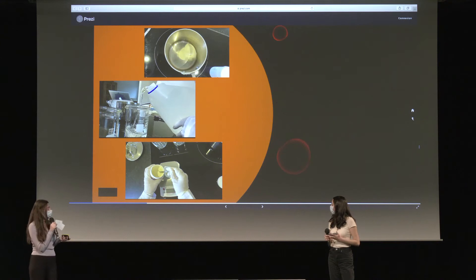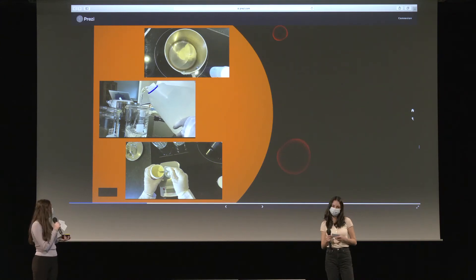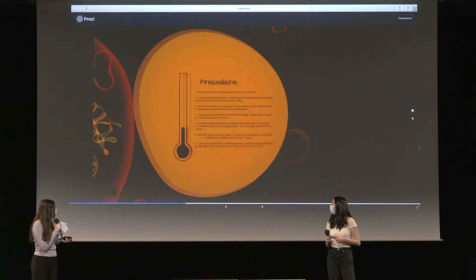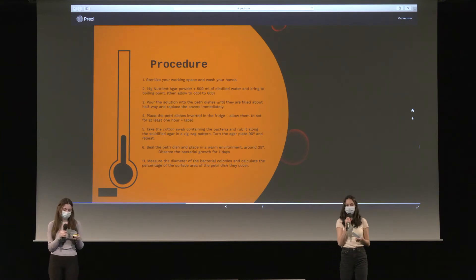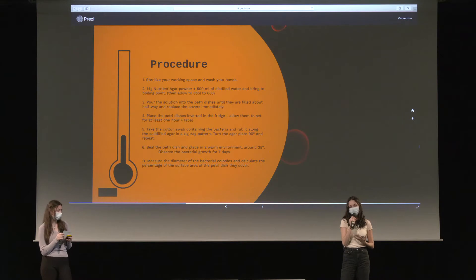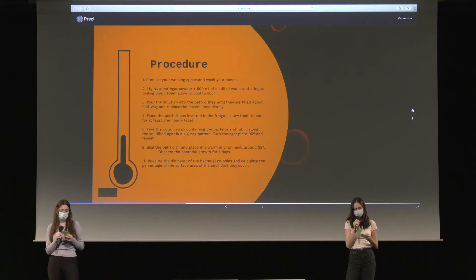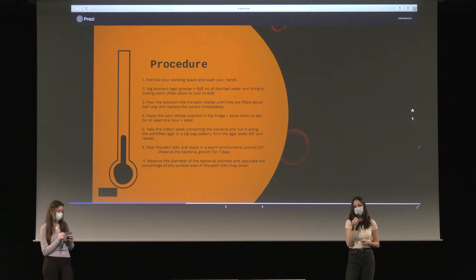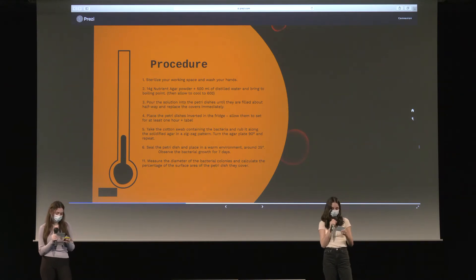Here are some pictures of the materials we used. For our procedure, we started by sterilizing our entire workspace as well as any materials which we had not already bought sterilized. We then made our nutrient agar solution and sterilized it as best we could by bringing it to boiling point. To make the agar plates, we poured the agar solution into the petri dishes and kept them covered as much as we could to reduce air contamination.